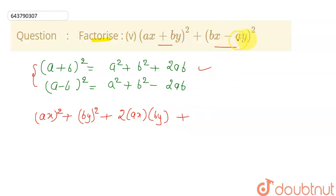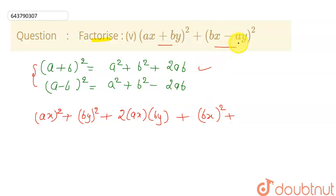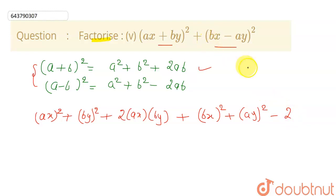Now let's open the second expression using this identity. This will again give the first term squared, which is bx squared, plus the second term squared, which is ay squared, minus 2 into the first term bx and the second term ay.